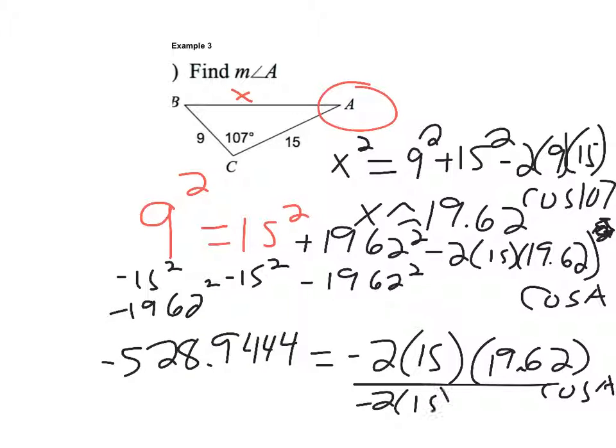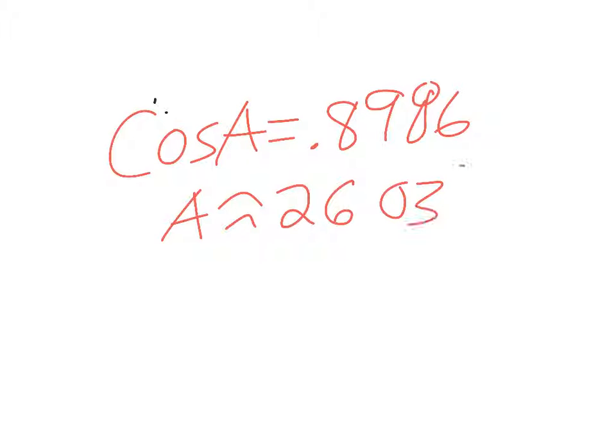So now I'm going to divide everything by negative 2 times 15 times 19.62. So divide negative, I'm going to put that in parentheses, negative 2 times 15 times 19.62. So I end up with 0.8986. So now I have cosine of A equals 0.8986 and I'll take the inverse cosine of both sides. So 0.8986 and I get A is about 26.03 degrees.